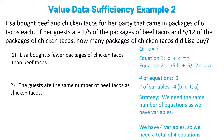Here's the strategy: we need to have the same number of equations as we have variables in order to calculate an exact value for C. We have four variables, so we need a total of four equations. We've already been given two equations in the question stem, so we are looking for two more equations.